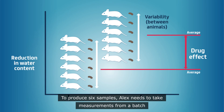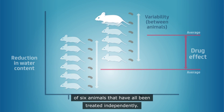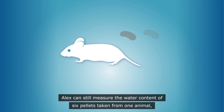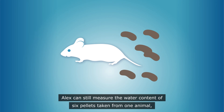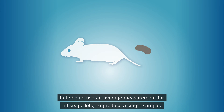To produce six samples, Alex needs to take measurements from a batch of six animals that have all been treated independently. Alex can still measure the water content of six pellets taken from one animal, but should use an average measurement for all six pellets to produce a single sample.